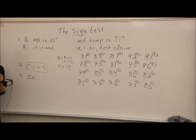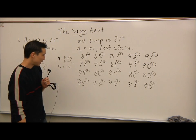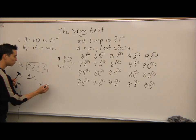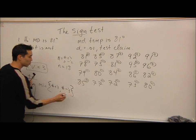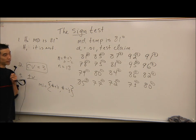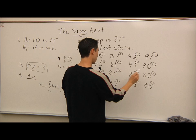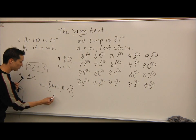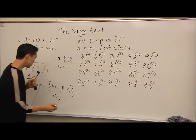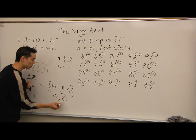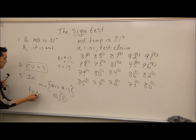Moving on to the test value — in non-parametric statistics these look a bit different. The test value is the minimum of the total number of pluses and the total number of minuses, whichever is smaller. Counting through: 10 pluses and 8 minuses — that adds up to our 18. The smaller is 8, so the test value is 8.